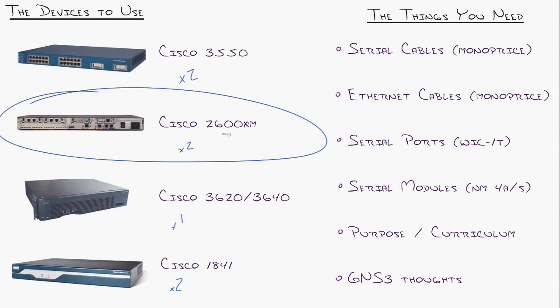2600XM routers, you get like 2611, 2621, those kind of things. Great routers, huge feature set. These guys right here work well as a frame relay switch that you can configure everything to connect to as a hub.